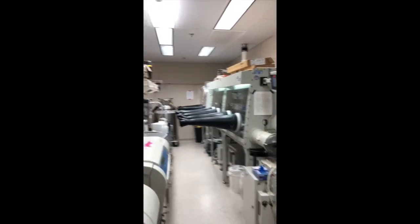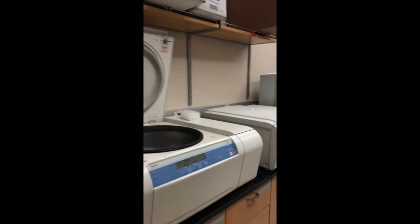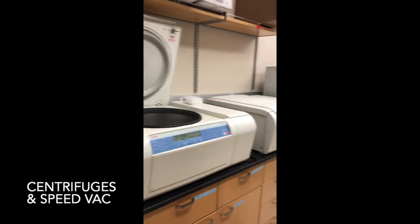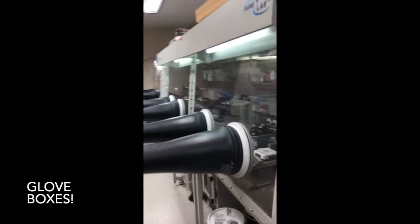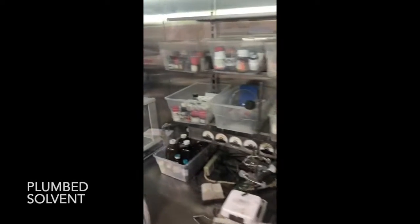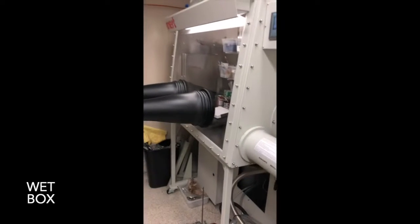Solvent purification is here. Opposite that we have our large centrifuges for handling cell cultures. There's a speed vac for removing solvents and then of course our glove boxes. Here we have some plumbed solvent balance, all the sorts of things one typically finds in a glove box for organometallic chemistry.